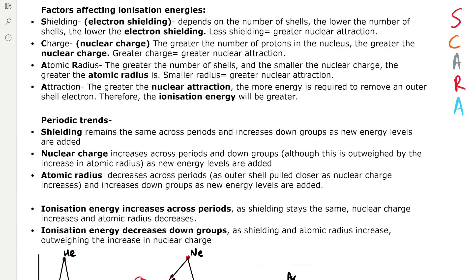There are certain factors affecting ionisation energies. I like to remember them using the mnemonic SCARA: shielding, charge, atomic radius, and attraction. Shielding, or electron shielding, depends on the number of shells — the lower the number of shells, the lower the electron shielding; less shielding means greater nuclear attraction. Nuclear charge: the greater the number of protons in the nucleus, the greater the nuclear charge, and greater charge means greater nuclear attraction to the outer shell electrons. Atomic radius: the greater the number of shells and the smaller the nuclear charge, the greater the atomic radius. A smaller radius leads to greater nuclear attraction because the outer shell electrons are closer to the nucleus. Finally, attraction: the greater the nuclear attraction, the more energy is required to remove an outer shell electron, therefore the ionisation energy will be greater. Ionisation energy is essentially a measure of the nuclear attraction to the outer shell electrons.